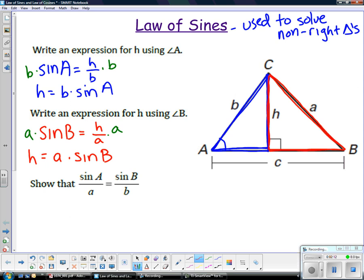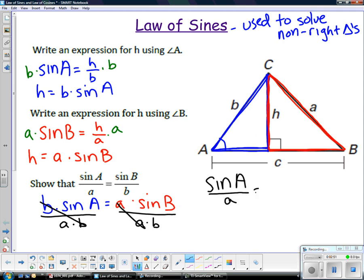Since the height is the same in both triangles, I can set the two pieces equal. So I can set b times the sine of A equal to a times the sine of B. Now if I divide both sides by a times b, the b's cancel on the left, the a's cancel on the right. So I get the sine of angle A over side a is equal to the sine of angle B over side b.